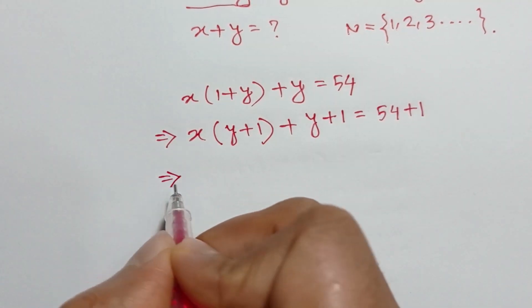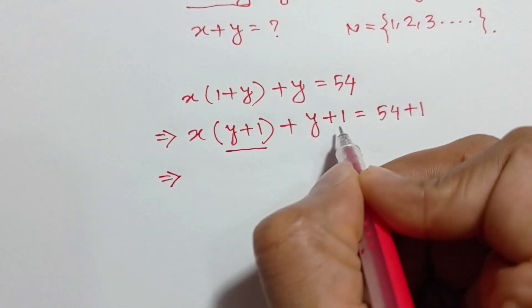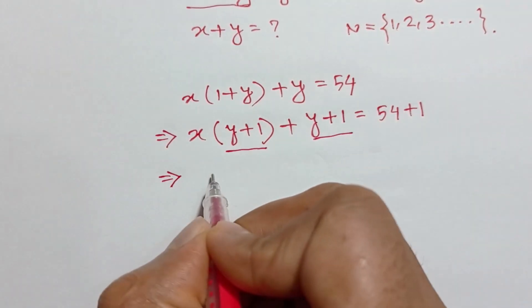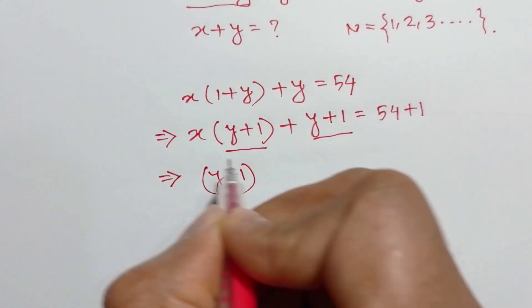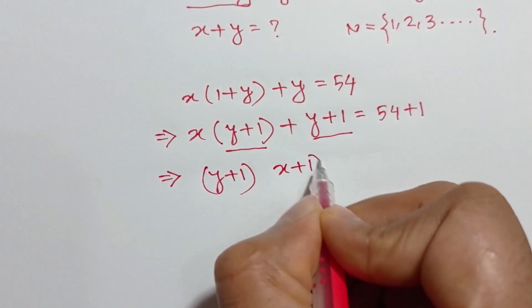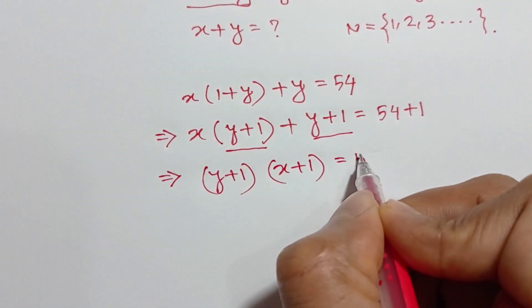Or if we take common y plus 1 from here and here, we get y plus 1 times x plus 1 is equal to 55.